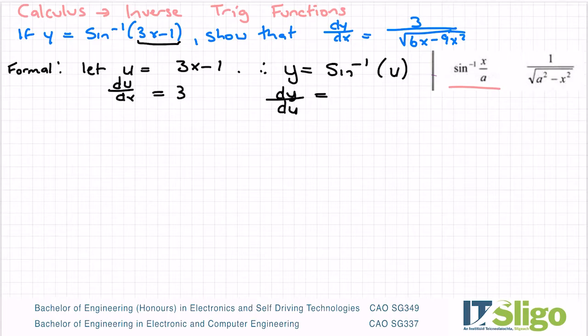So that's equal to, and I'm going to put my u over 1. The reason for that is here. What's on the top we label as x, what's on the bottom we label as a. So this is my x, and this is my a. And I'm now going to sub these into this formula here. So dy/du is equal to 1 over the square root of my a is 1 squared, my x is u squared.